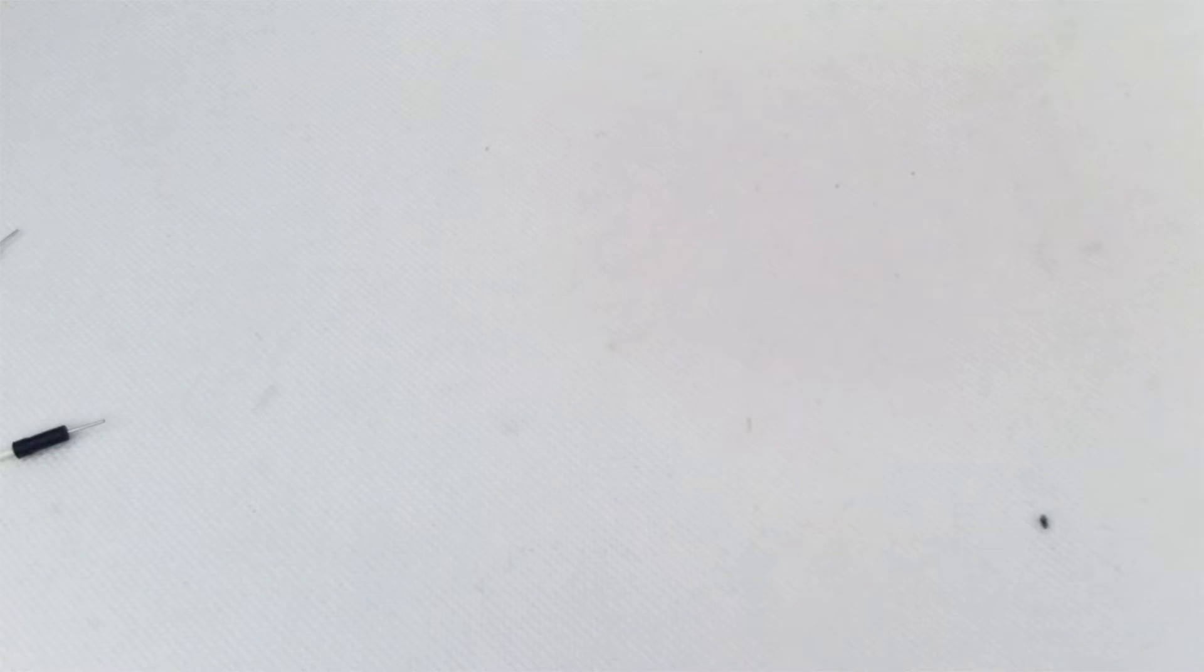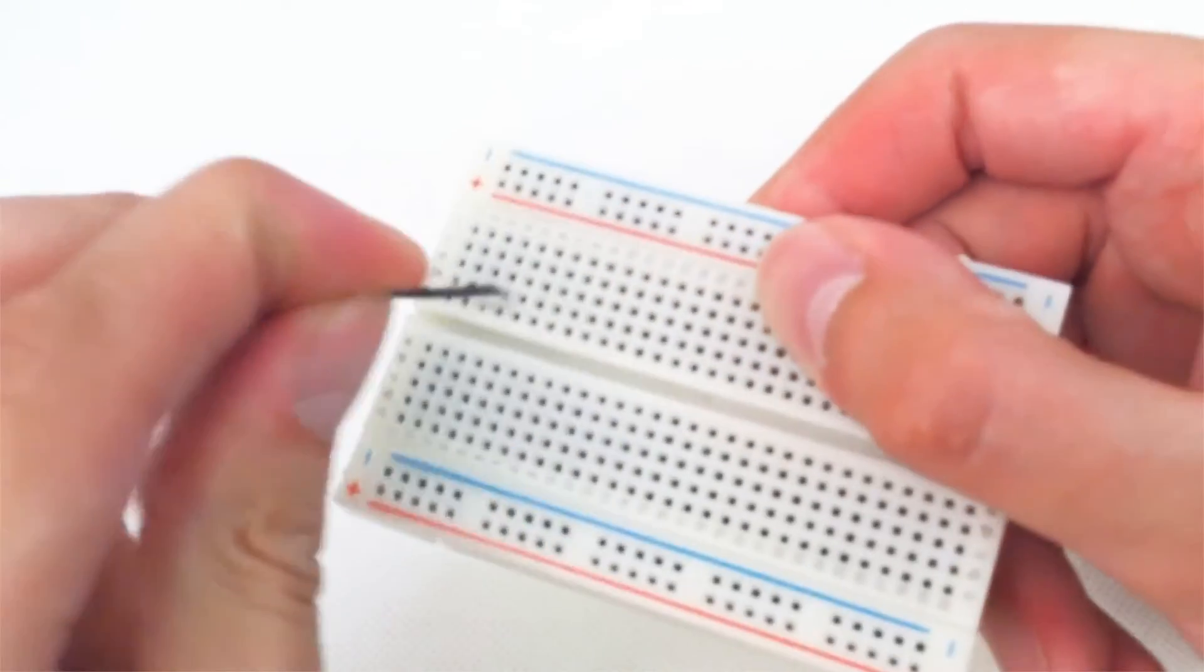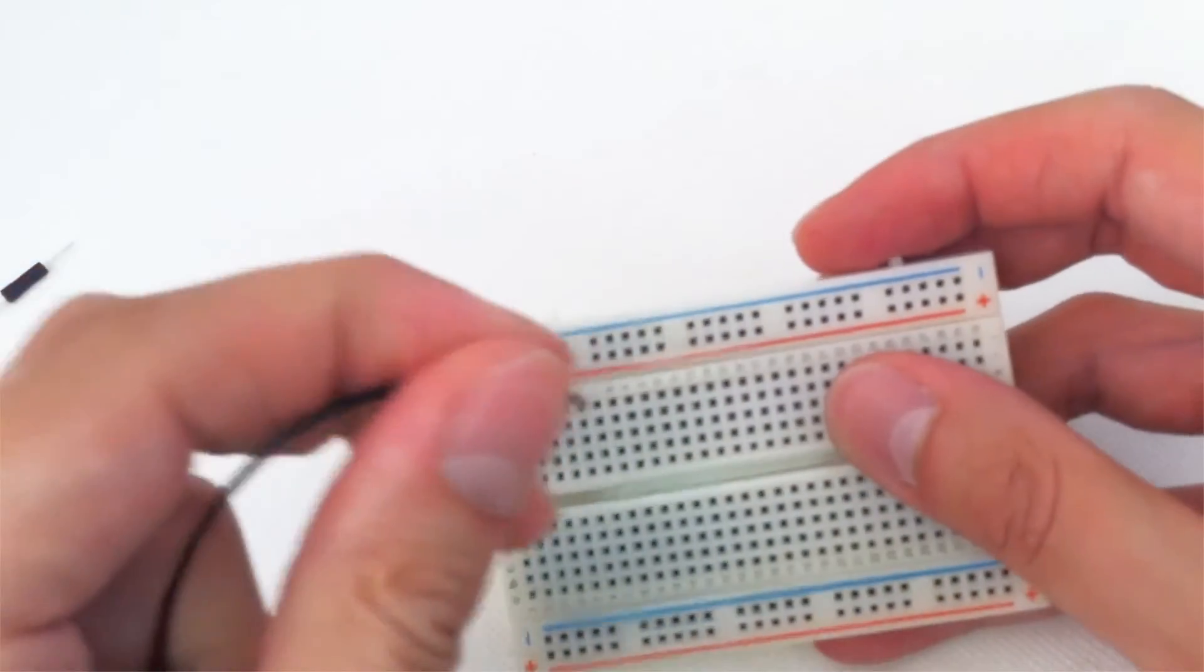And now on to types of wire. Stranded wire isn't very useful as you can guess putting together in the breadboards. So you're better off with a single core wire.